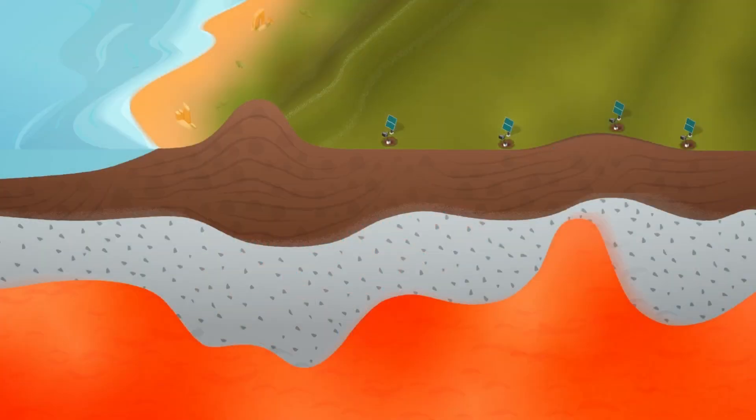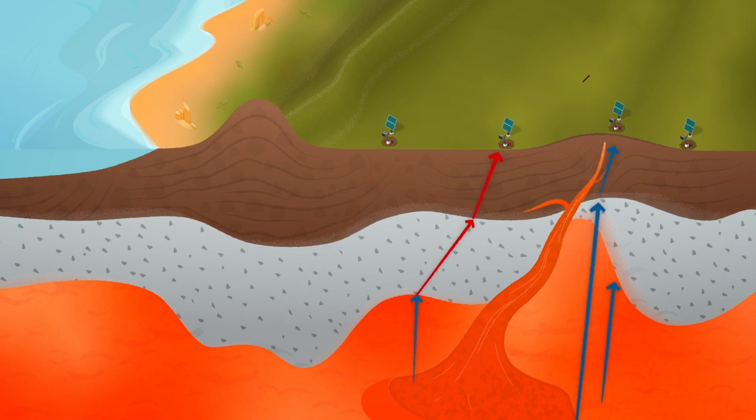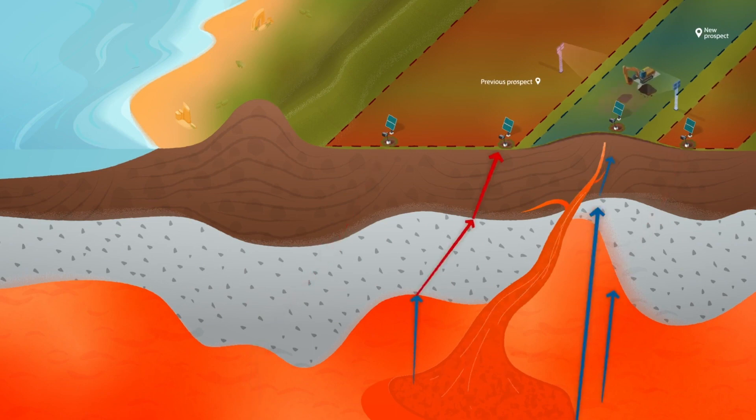Combined with our existing knowledge of the WA crust, this information about the lithospheric mantle will be used to create the world's most sophisticated 3D map of the lithosphere. This will help better understand seismic hazards, inform land use decisions, and refine our geological models to determine new exploration prospects.